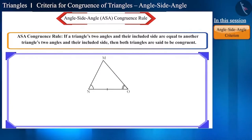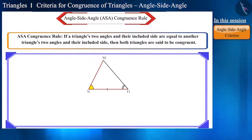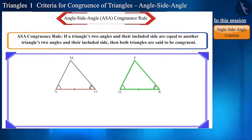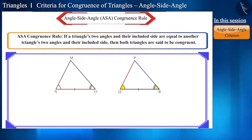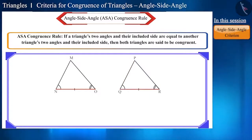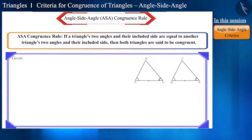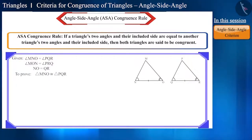Let us draw a figure with the help of this statement. Two angles of triangle MNO, i.e. angle MNO and angle MON, and their included side, i.e. side NO, are equal to the two angles of the second triangle PQR, i.e. angle PQR and angle PRQ, and the included side, i.e. side QR. Then both triangles MNO and PQR will be congruent. We are given that these angles and side are equal and we have to prove that both triangles are congruent.